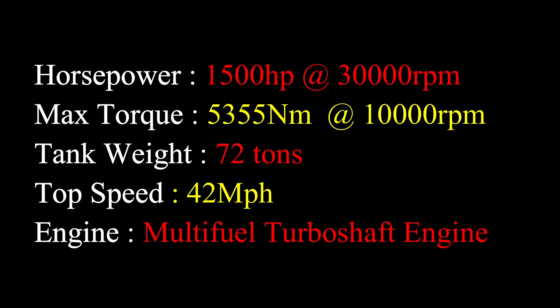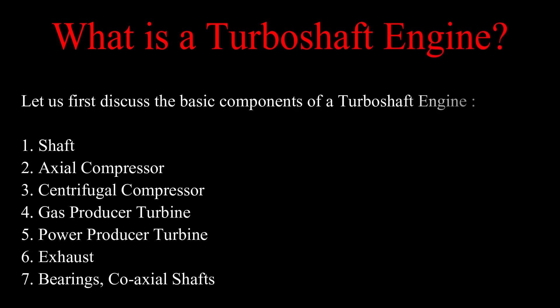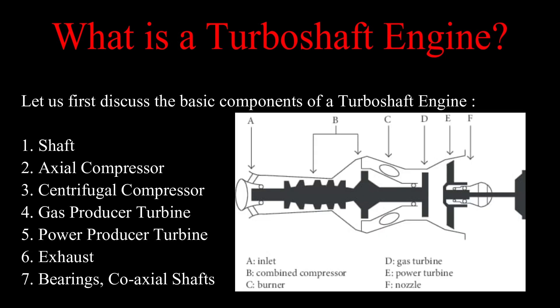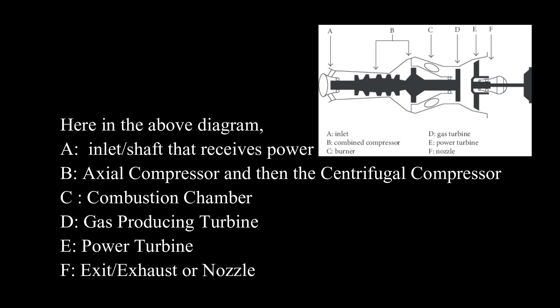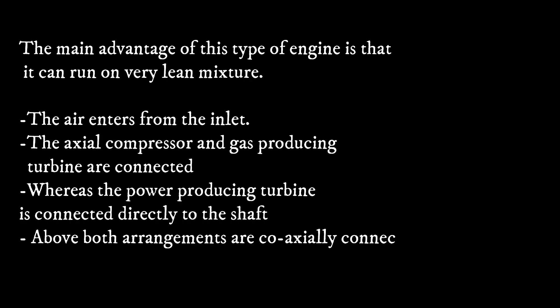The engine is a multi-fueled turboshaft. A turboshaft engine's basic components are: (1) shaft, (2) axial compressor, (3) centrifugal compressor, (4) gas power turbine, (5) power producer turbine, (6) exhaust manifold, (7) bearings, and coaxial shafts. Here you can find the components marked and listed below.